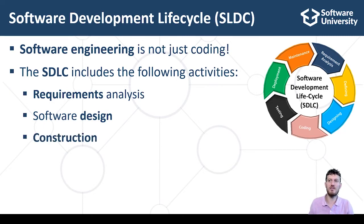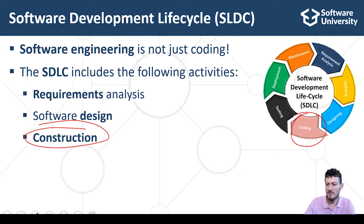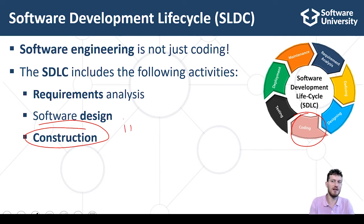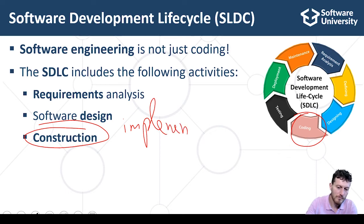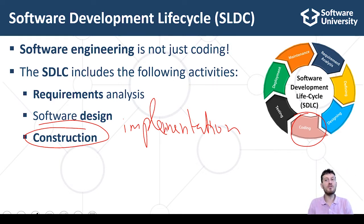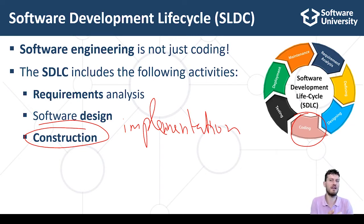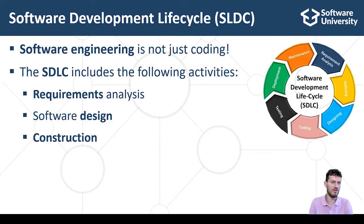Software construction is the phase in which developers create the software. It is also called the implementation phase because developers write the code to implement the planned functionality. During the implementation, developers not only write code, but they also debug and test the code and fix bugs, take decisions on how to implement certain functionalities, search for libraries and tools, design and implement the backend APIs, implement the user interface of the system, write automated tests such as unit tests and integration tests, and integrate different system components. The construction phase takes most of the time and resources during development.